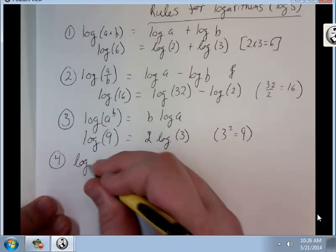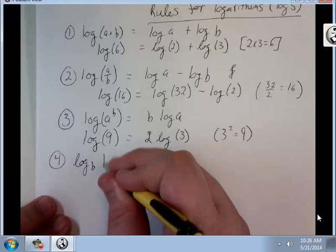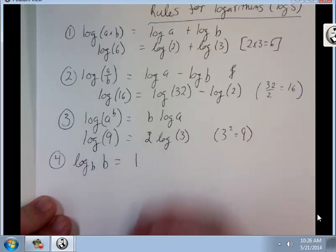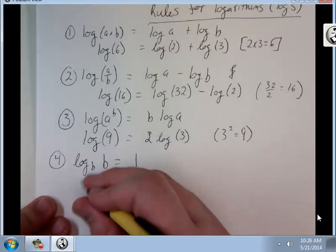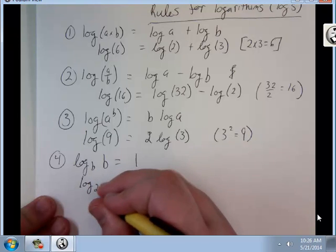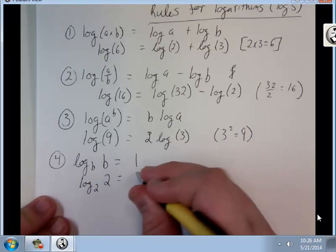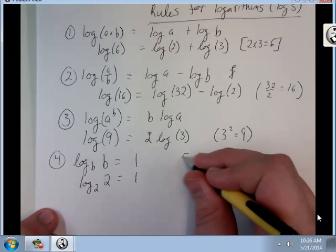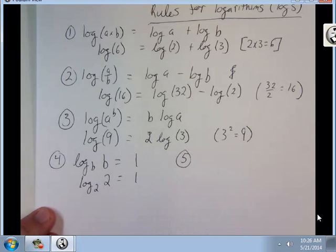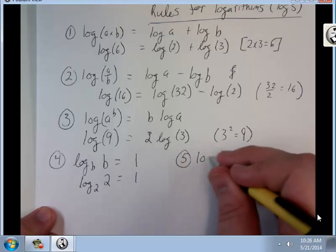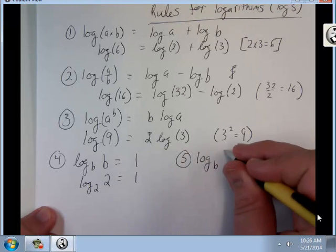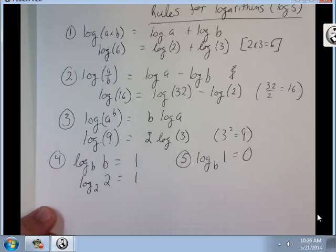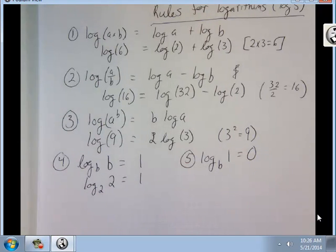Log to a base b of b equals 1. So, log to a base 2 of 2 equals 1. And the last rule, log to a base b of 1 equals 0. Log to any base of 1 is 0.